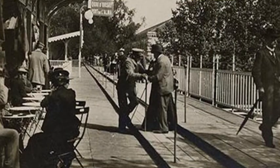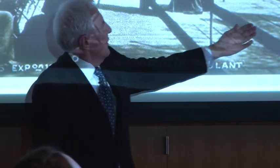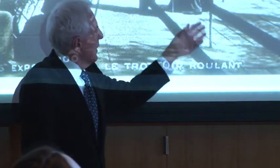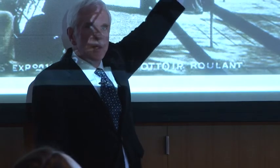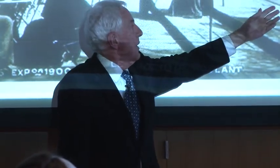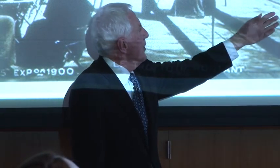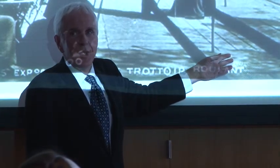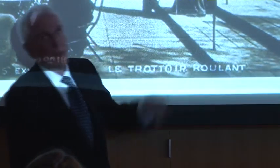In 1900, it was getting even more striking. Virtually everybody would ride on the moving sidewalk. There were two levels: the faster one transported you around the exhibition site, and when you wanted to get off, you went down to the slower level and eventually stepped off. Everybody had a go on that.